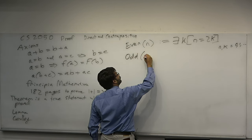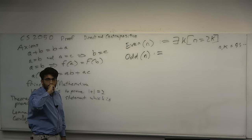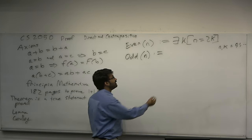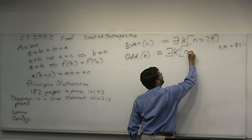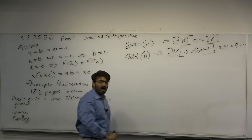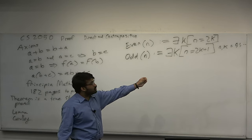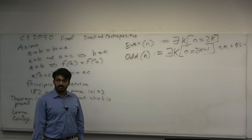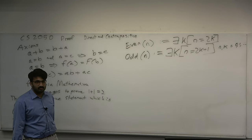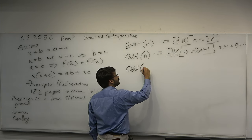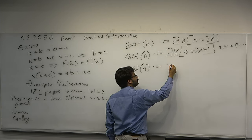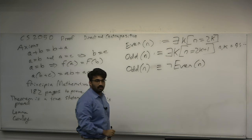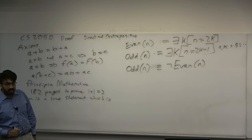For an odd number predicate: every odd number is just an even number plus one — there exists k such that n equals 2k plus 1. That's the definition of an odd number. Within the same universe of discourse of non-negative integers, the first even number is 0 and the first odd number is 1. You could also define odd as: a number which is not even.